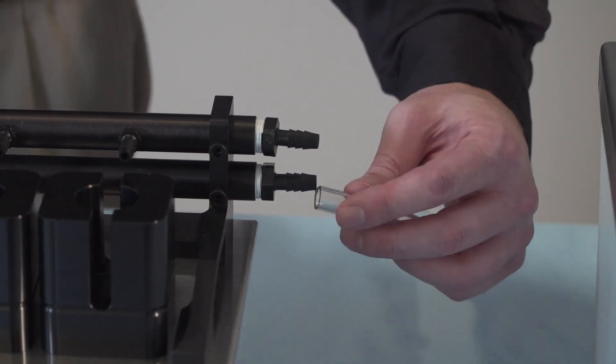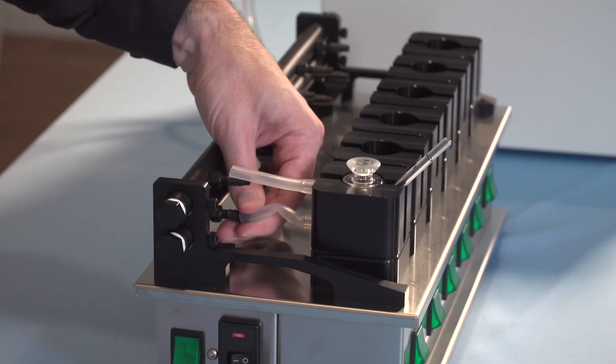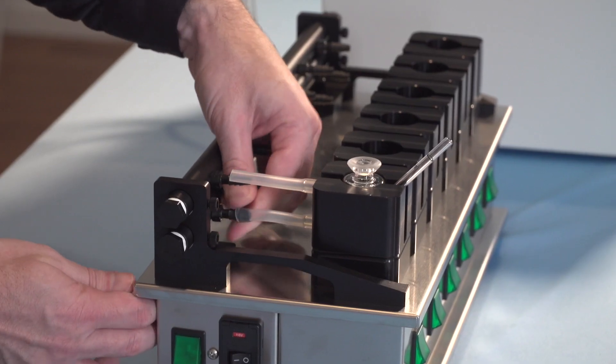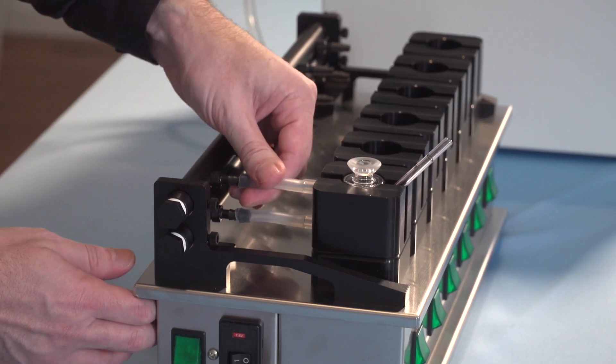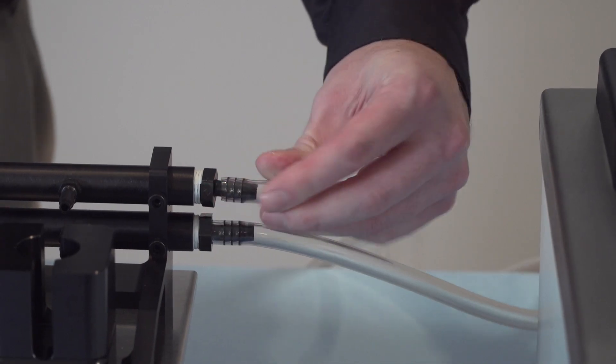To remove the most air, connect the output of the water bath to the lower bar of the manifold. Connect the cells in between the manifold bars and connect the water bath input to the top bar of the manifold.